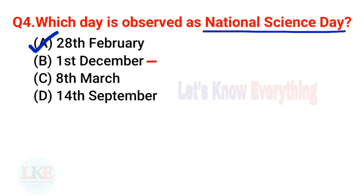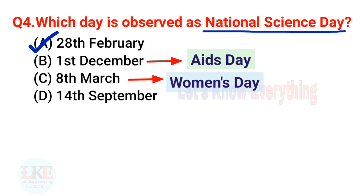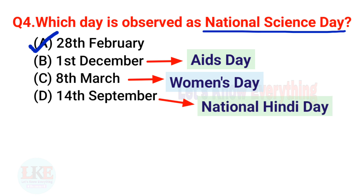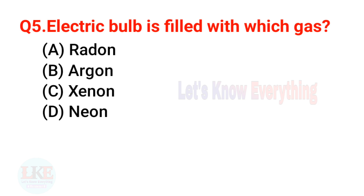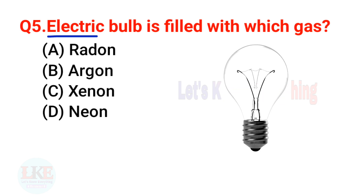For your information: option B, 1st December is observed as AIDS Day; option C, 8th March is celebrated as Women's Day; and option D, 14th September is celebrated as National Hindi Day. Question 5: Electric bulb is filled with which gas? A) Radon, B) Argon, C) Xenon, D) Neon.